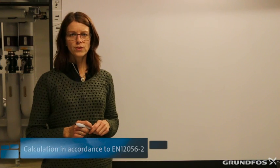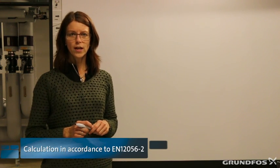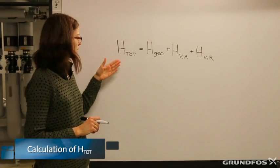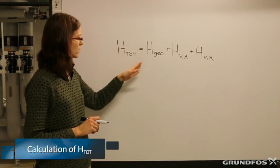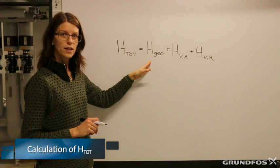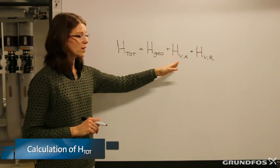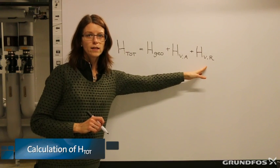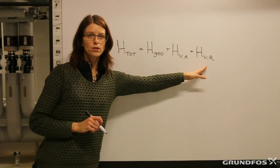I would like to show you how to calculate the required head in a wastewater system in a commercial building. In the EN standard 12056-2, we will find the formula to be used for that. The formula shows that the total head is the sum of the geodetic height in the system, the friction loss in the valves and fittings, and the linear friction loss in the pipes.